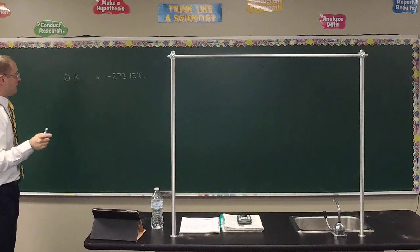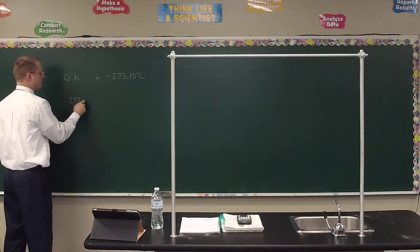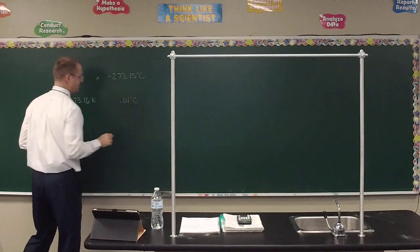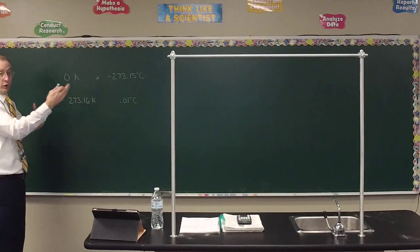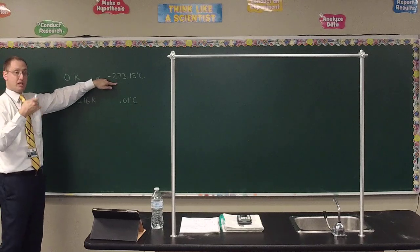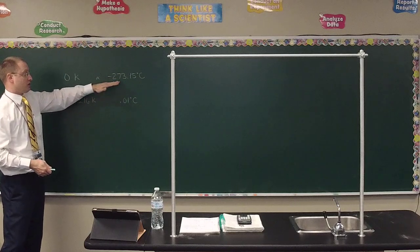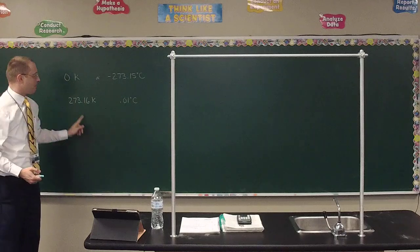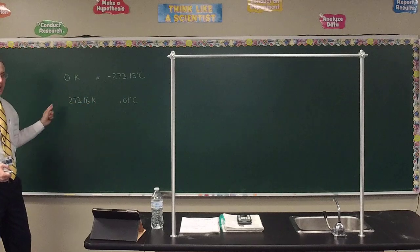To convert between Celsius and Kelvin, we add 273.15 to go from Celsius to Kelvin, or subtract 273.15 to go from Kelvin to Celsius. Note that 273.16 Kelvin, or 0.01°C, is a special temperature — but 273.15 is the number we use to convert back and forth.